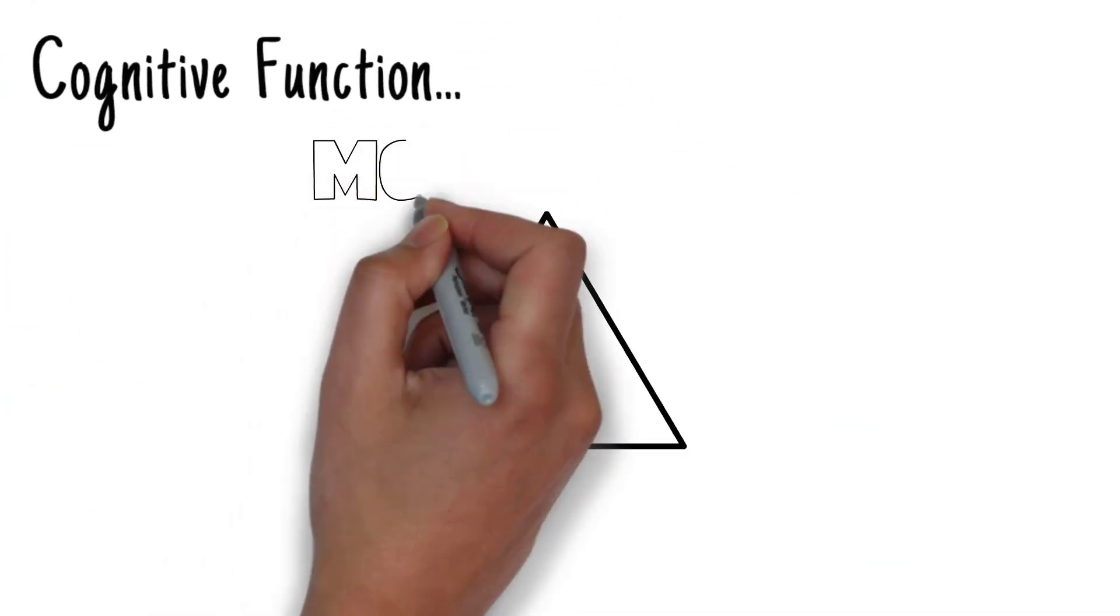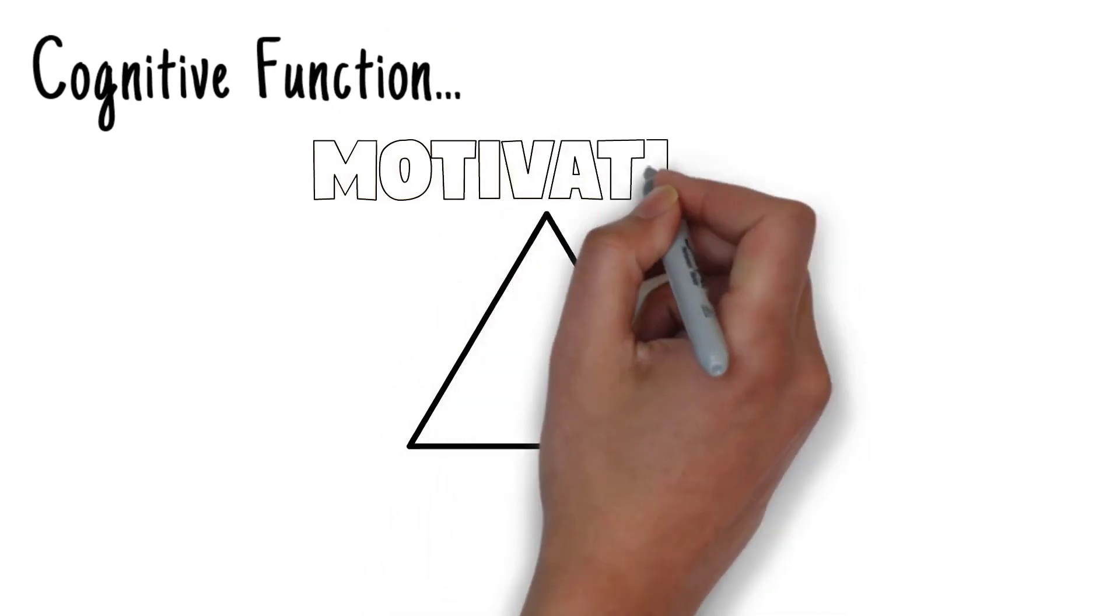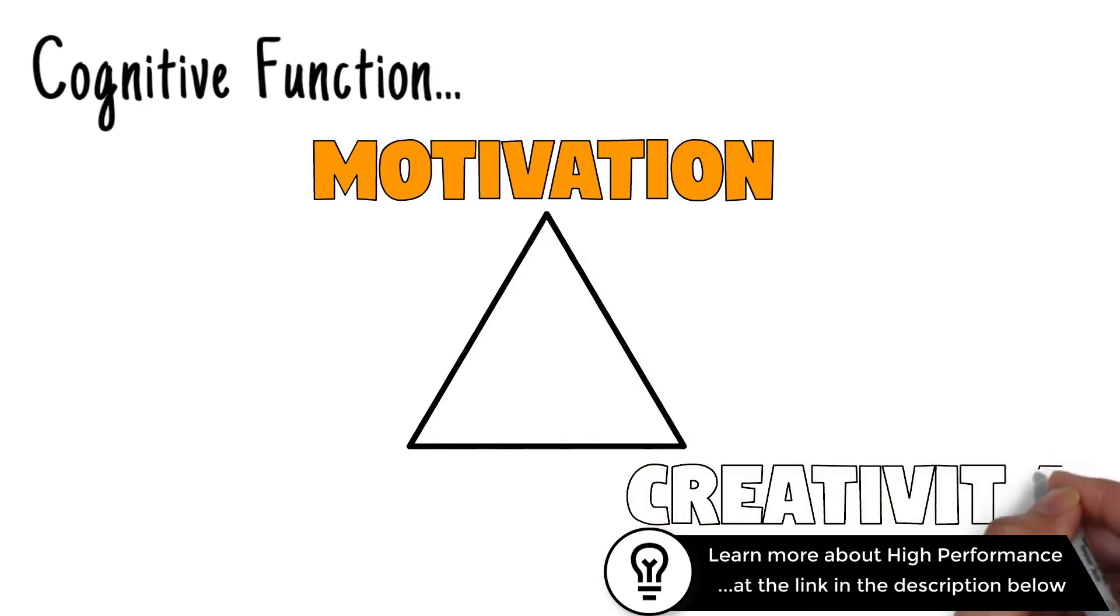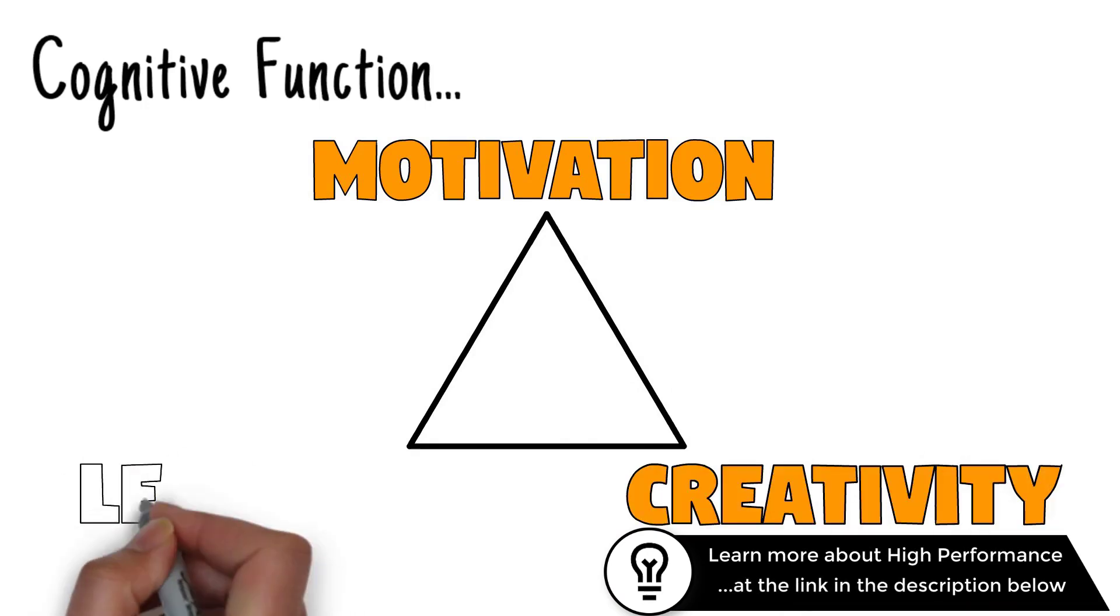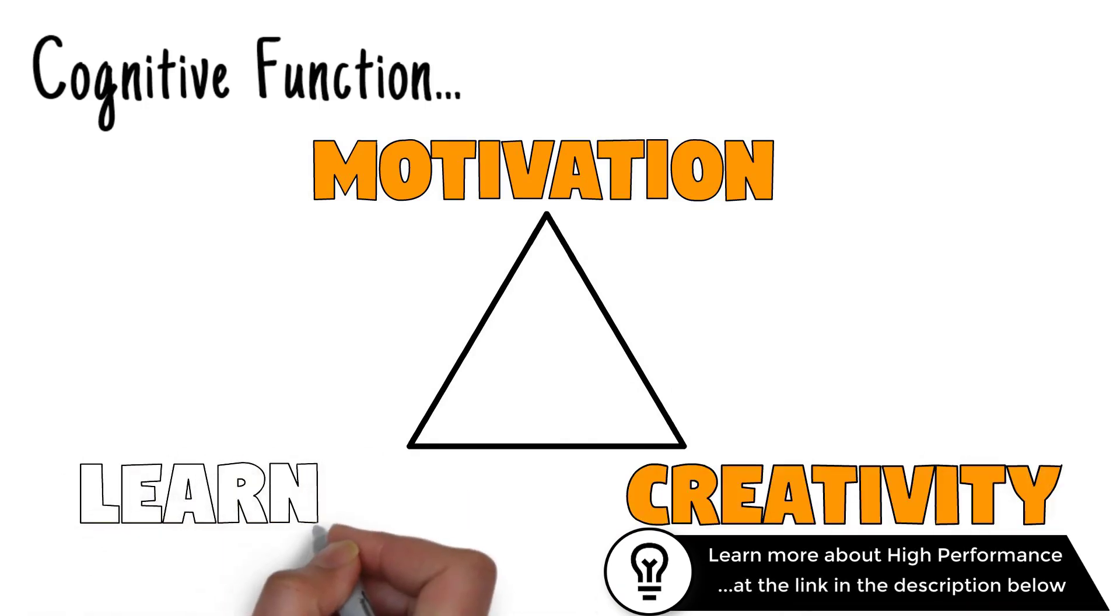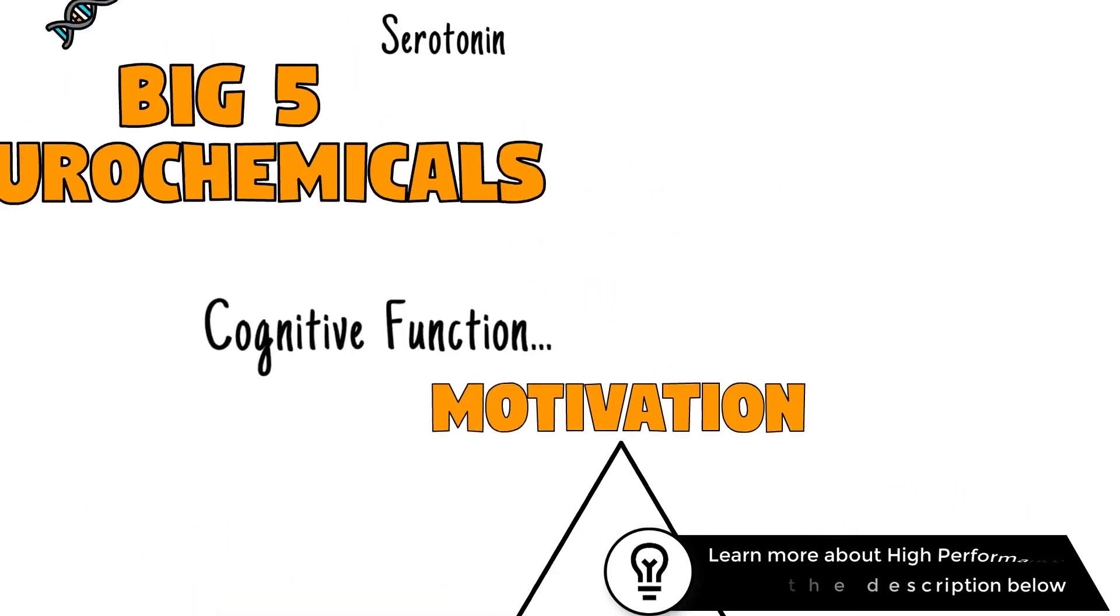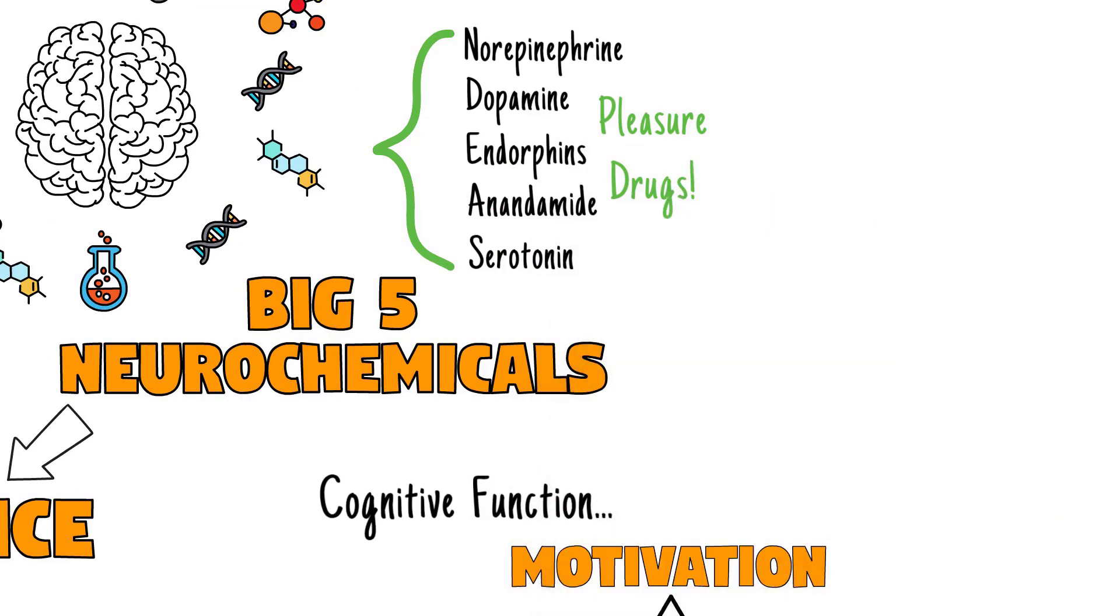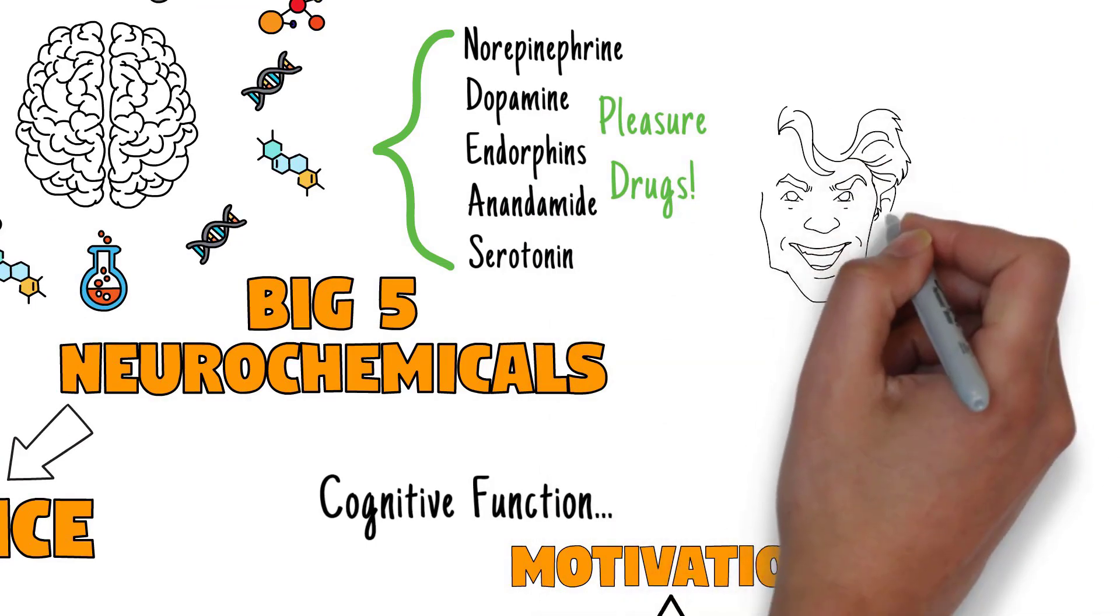If you really want to understand how flow can help us do the impossible, you need to understand how the state impacts the three sides of the high-performance triangle, and more specifically how these five neural chemicals impact the three sides of the high-performance triangle. That's motivation, creativity, and learning.